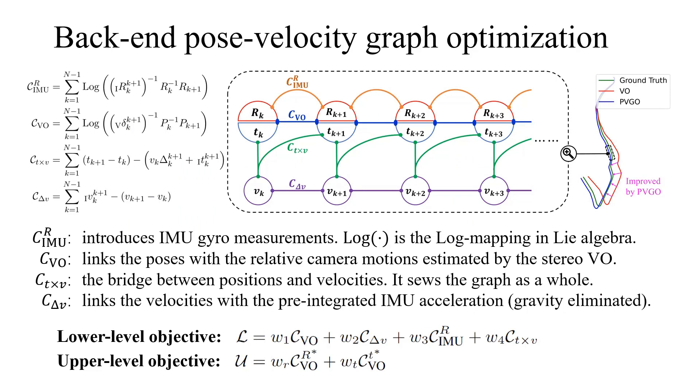In the back-end, we employ a pose velocity graph optimization to integrate the estimation from visual and inertial odometry and jointly contribute to a more accurate trajectory. The optimization variables, i.e., the poses and velocities, are nodes in the graph, which are connected by four types of geometric constraints.